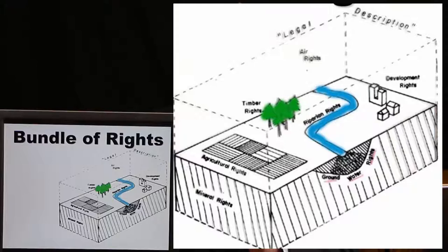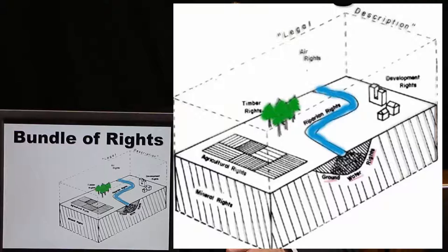Here's a schematic — a cross-section of a piece of earth — and you can see there's water flowing through it. Some of the rights would be water rights; above that would be air rights. There are agricultural rights below the ground, and mineral rights. Over on the right-hand side there are development rights where those buildings are, and many, many other rights.